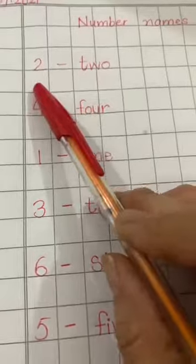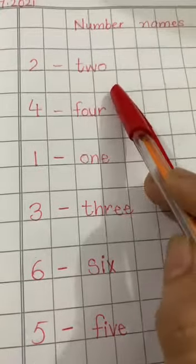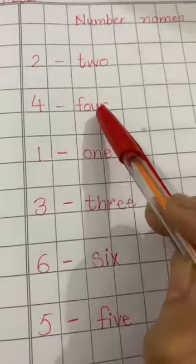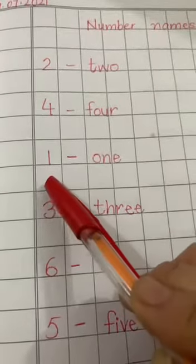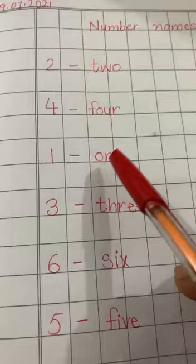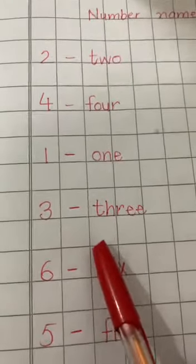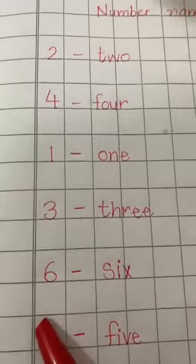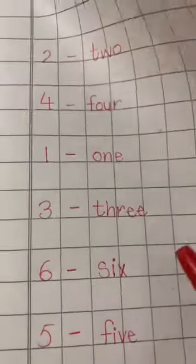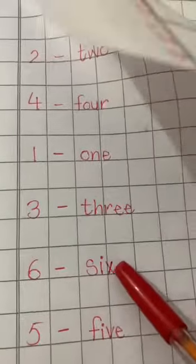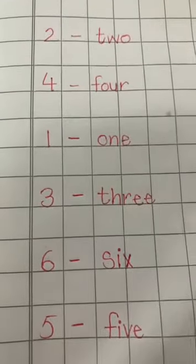Two: T-W-O. Four: F-O-U-R. One: O-N-E. Three: T-H-R-E-E. Six: S-I-X. Five: F-I-V-E.